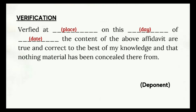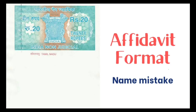Put the signature of the advocate along with his designation. After filling this affidavit format, kindly attach the certificate which proves that the correct name is mentioned there, and send it to DGMS if there is a query for name mistake. This is only a sample affidavit format.